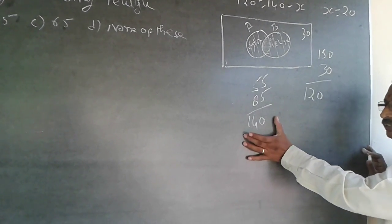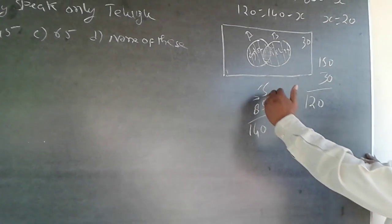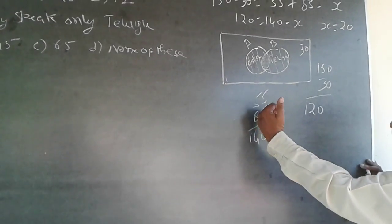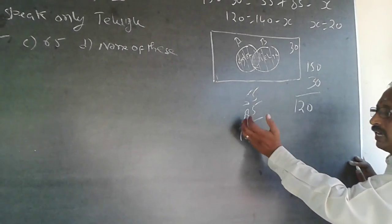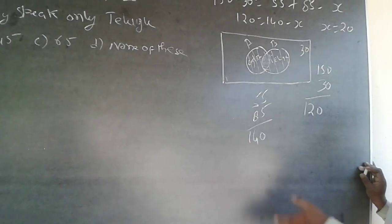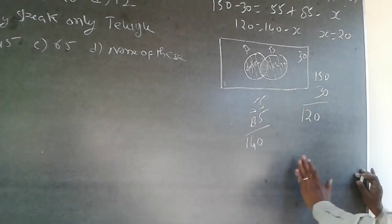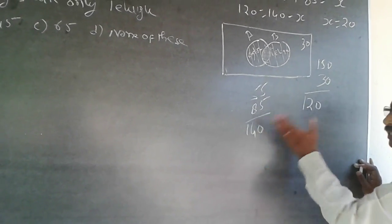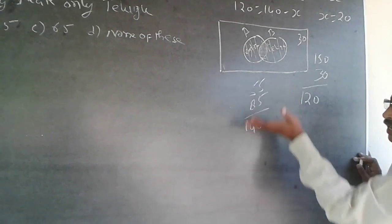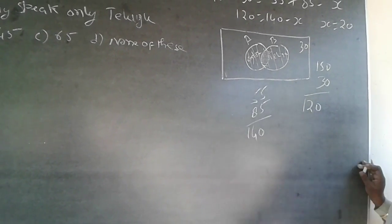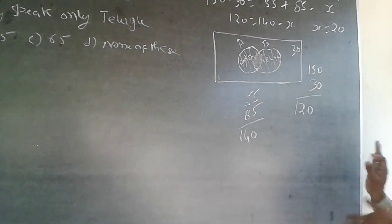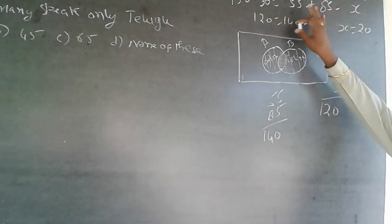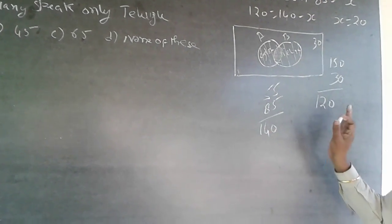The reason we get 140 instead of 120 is that 20 people's names appear in both the 55 (English) and the 85 (Telugu) counts. So 20 have studied both. The difference between 140 and 120 is the intersection — as simple as that. 150 minus 30, then subtract the total — the difference is the intersection part.